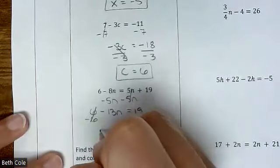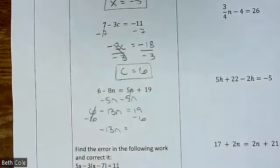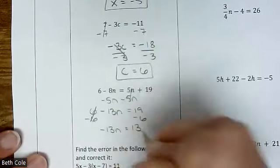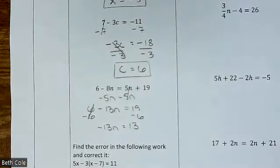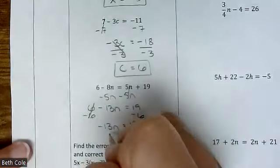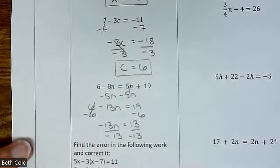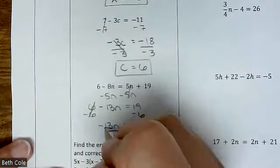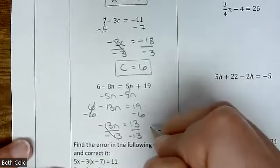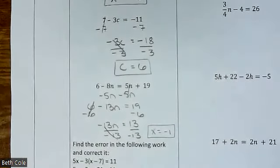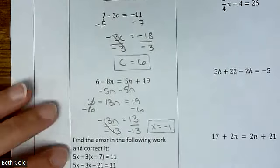So that will give you negative 13n equals 13. Good. Divide by negative 13 — so 13 over 13 would be 1 — this would just be negative 1. Good. And then that last one is worked out but you have to find the error and fix it.